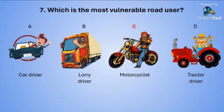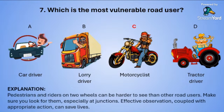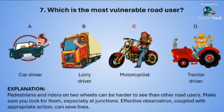Pedestrians and riders on two wheels can be harder to see than other road users. You need to make sure that you look for them, especially at junctions. Effective observation coupled with appropriate action can save lives.